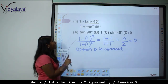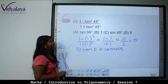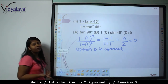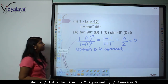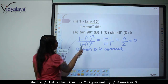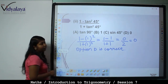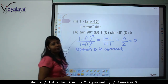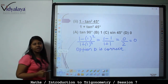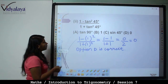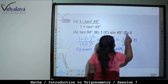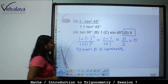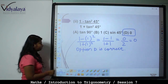Next: (1 minus tan square 45) upon (1 plus tan square 45). Tan 45 value is 1, so: 1 minus 1 whole square upon 1 plus 1 whole square, that is 1 minus 1 is 0, 1 plus 1 is 2, giving 0 by 2, that is 0. Hence option D, that is 0, is correct.